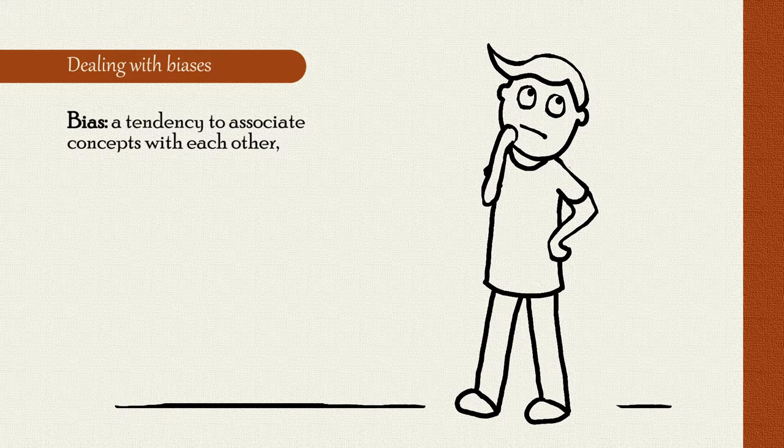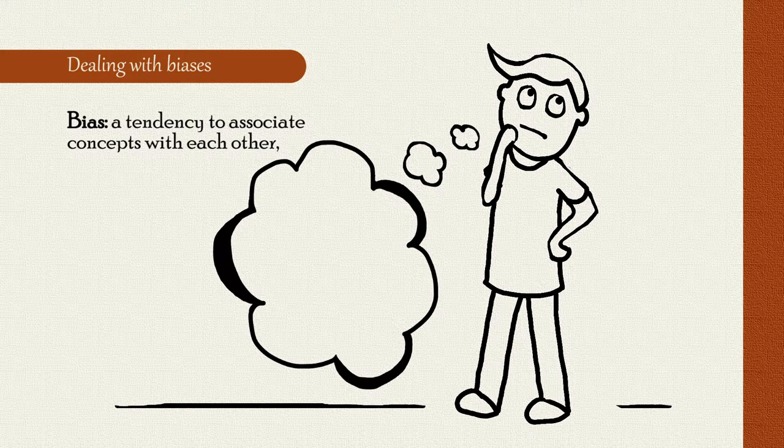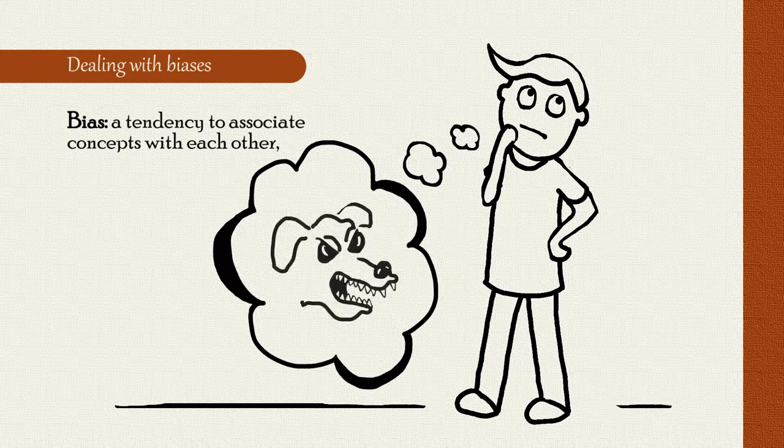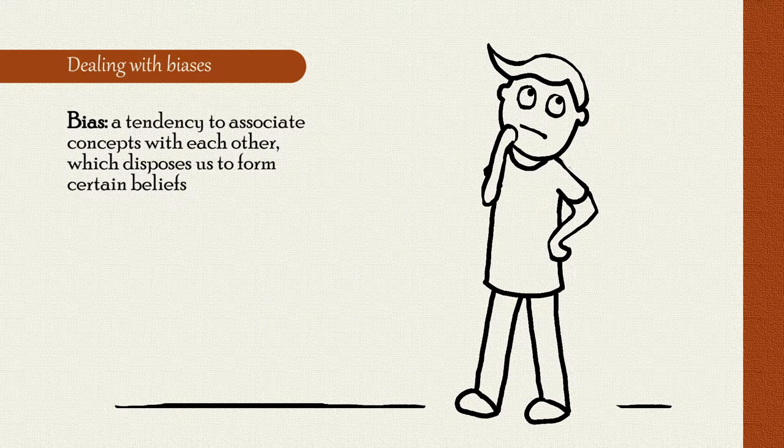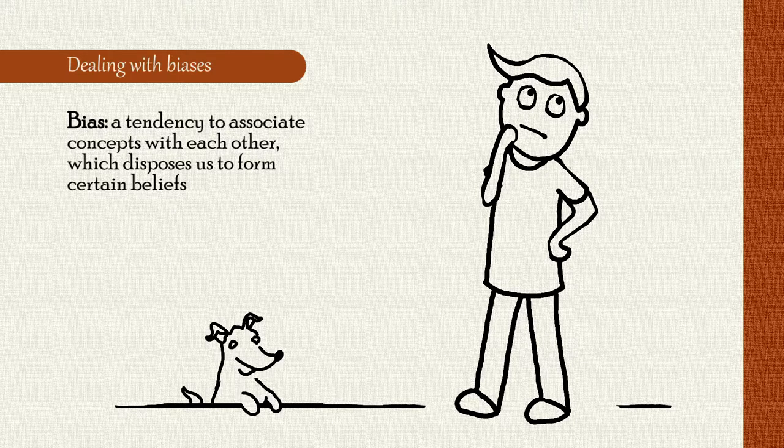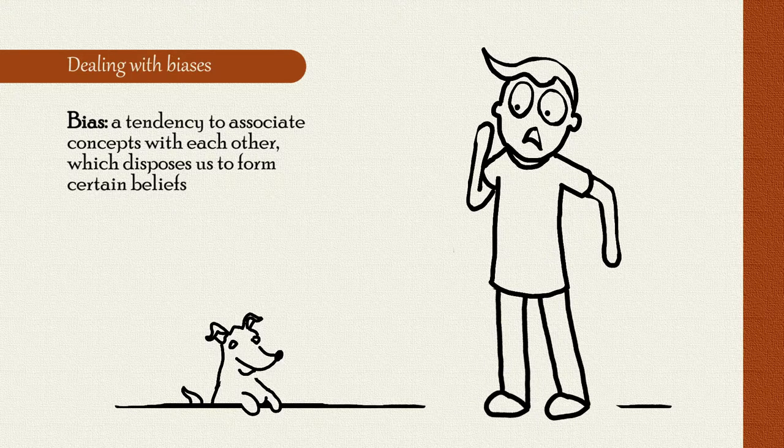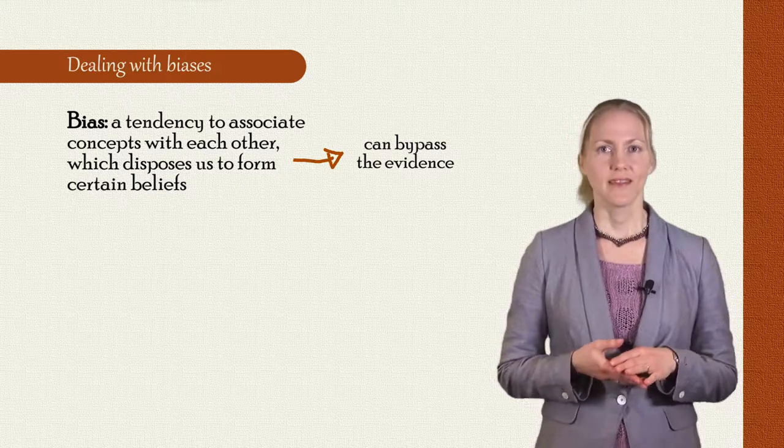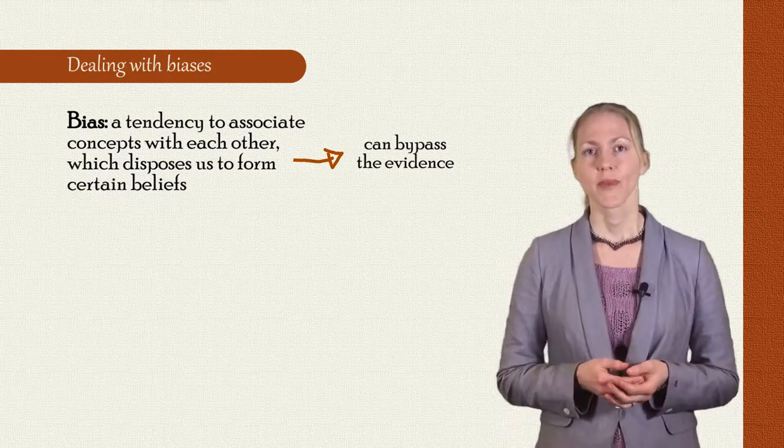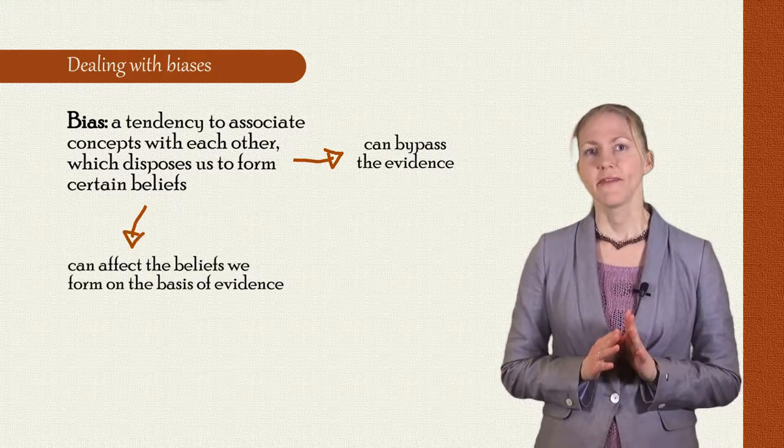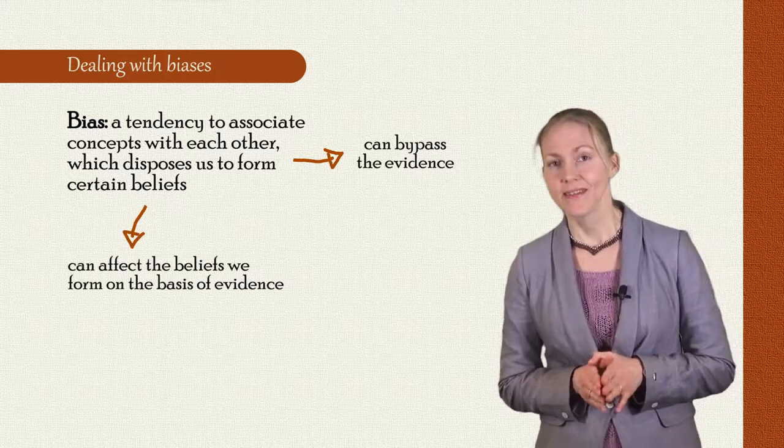It's a tendency to associate concepts with each other, such as the concept dog and danger. When we have an association like this, we're disposed to form certain beliefs. For example, if we come across a dog, we'll tend to believe that it's dangerous. Sometimes biases just cause us to form these beliefs without any evidence at all. But other times, they affect the beliefs that we form on the basis of evidence itself.